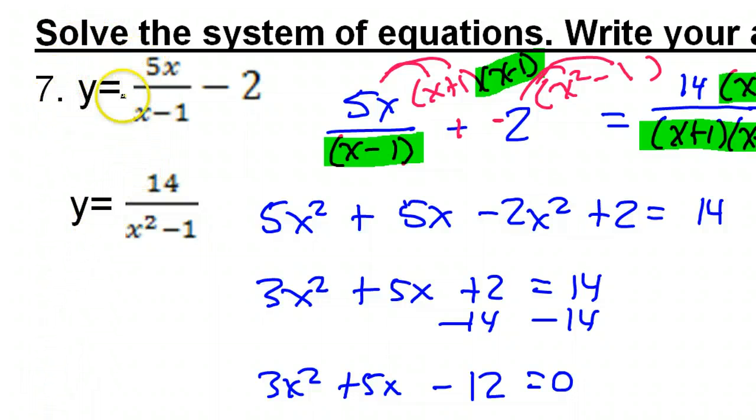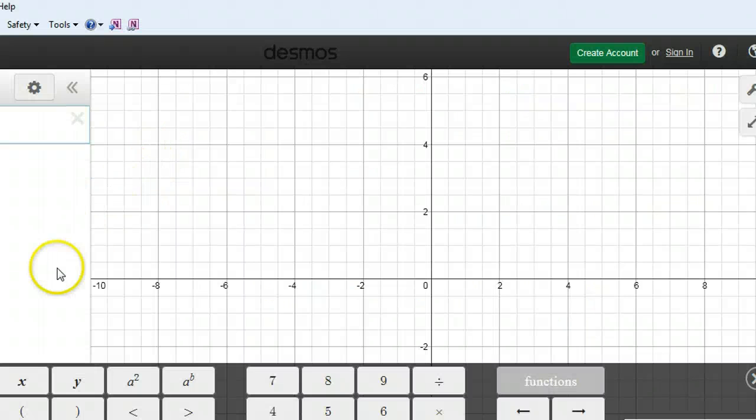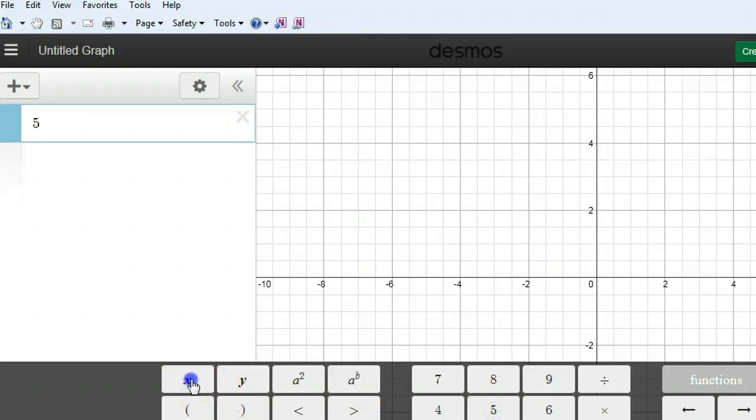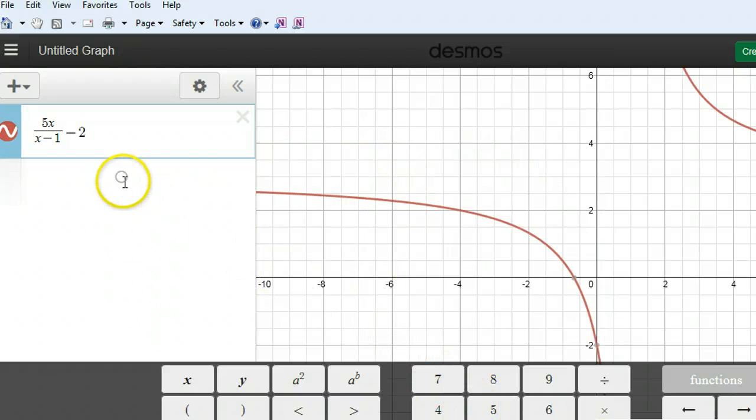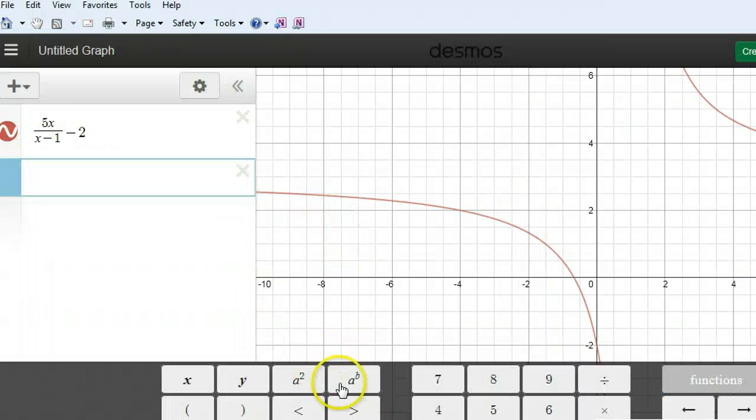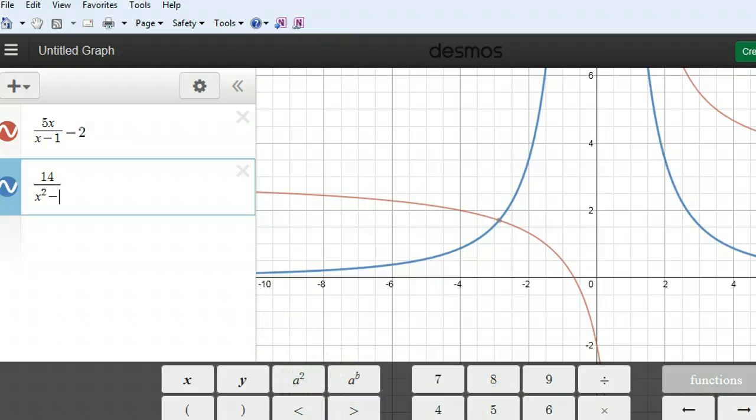Alright. Let's take a quick peek at desmos.com to see what this looks like on a graphing calculator. So, let's see. We have 5x over x minus 1. Okay. So, I have 5x. Well, I guess I should. Hold on. I'm going to hit the division sign first. So, go into fraction mode. So, I have 5x over x minus 1. Okay. But, then we have minus 2. So, minus 2. So, that's one equation. Now, the... And, you can see the graph forming right there. The other equation is 14 over x squared minus 1. So, again, fraction mode. So, again, fraction mode. So, I go 14 over x squared minus 1. Okay? And, we are looking for the intersections of these two points.